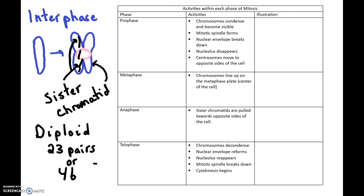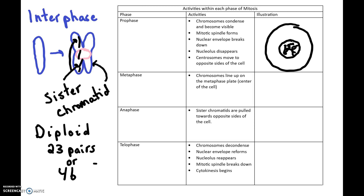Now we're going to look at each phase, beginning with prophase. The first activity: chromosomes are going to condense and become visible. So I'm going to draw a single animal cell with a nucleus inside. The chromosomes are going to begin to condense — what you'd see under a microscope is that the chromosomes start to get really thick and chunky. The mitotic spindle begins to form, which is a structure that consists of centrioles and microtubules.